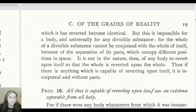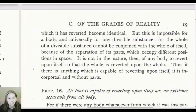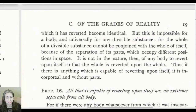This is impossible for a body and universally impossible for any divisible substance. The whole of a divisible substance cannot be conjoined with the whole of itself because of the separation of its parts, which occupy different positions in space. Therefore, if a body cannot revert on itself, nothing in the physical realm can revert on itself — reversion takes place beyond the physical realm. It is not the nature of any body to revert upon itself so that the whole is reverted upon the whole. Thus, if there is anything capable of reverting upon itself, it is incorporeal and without parts.